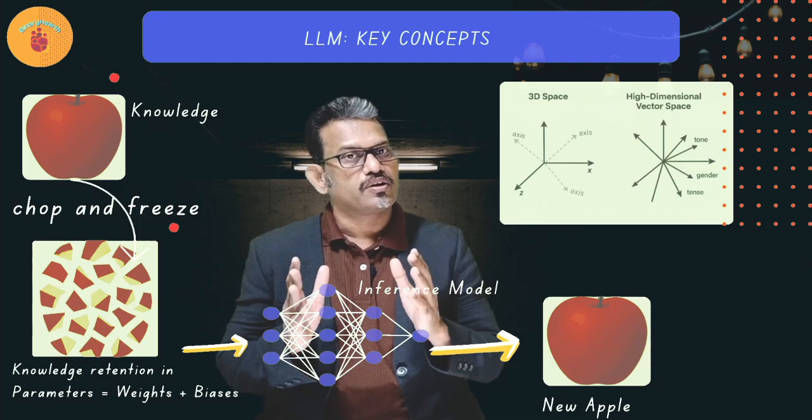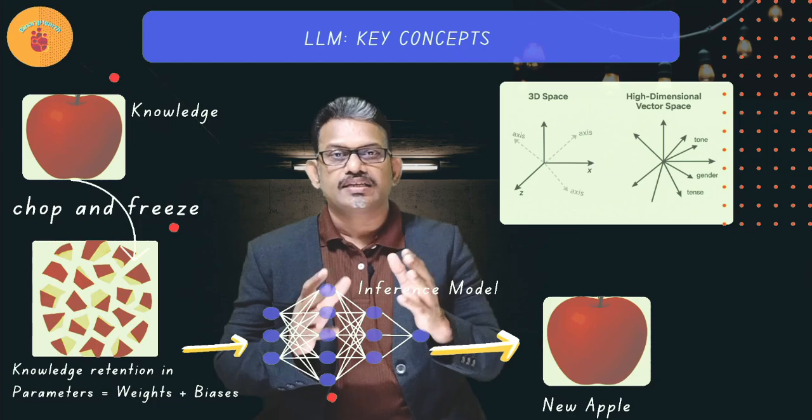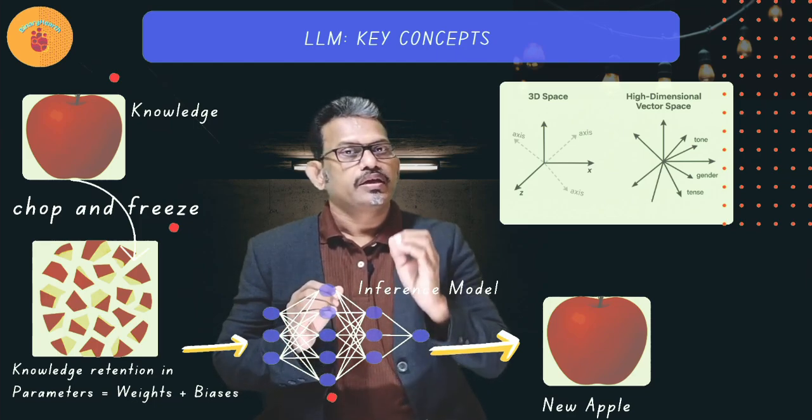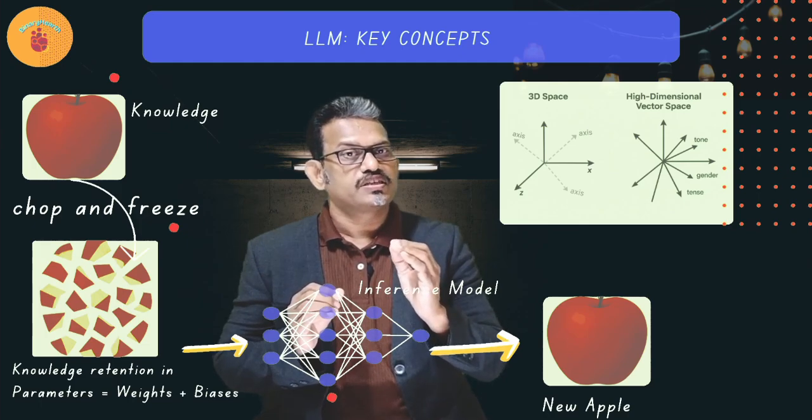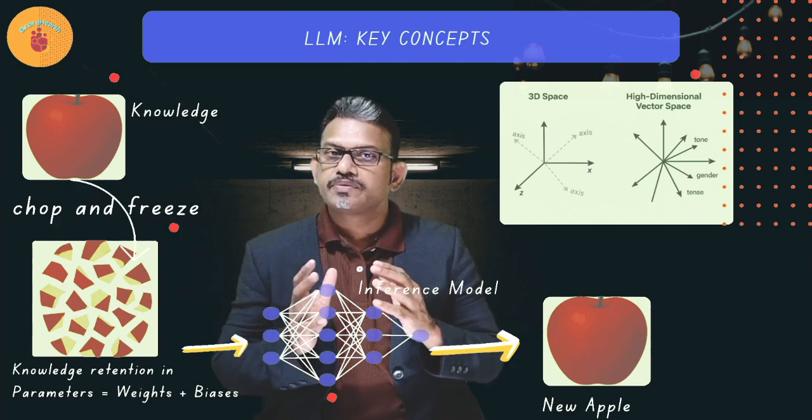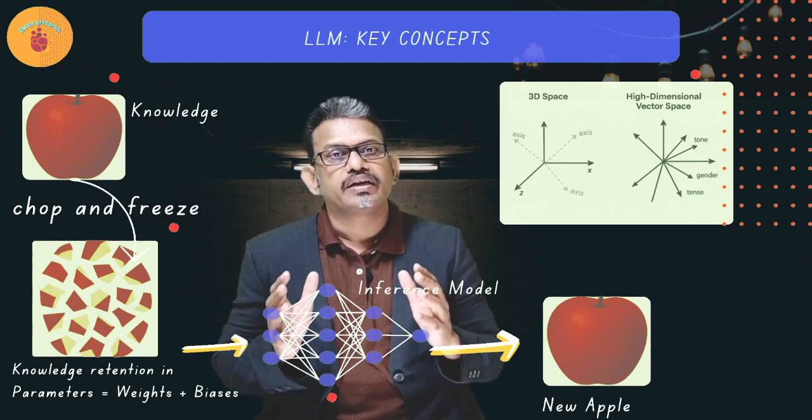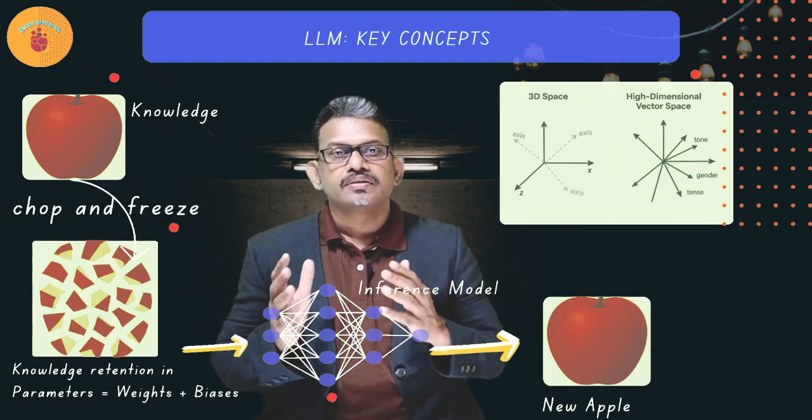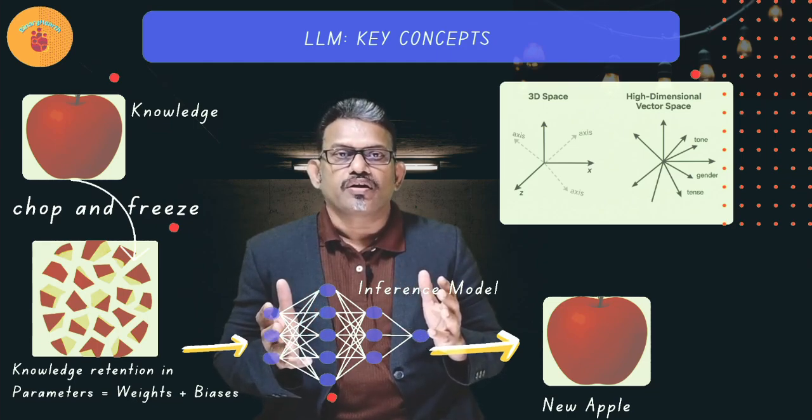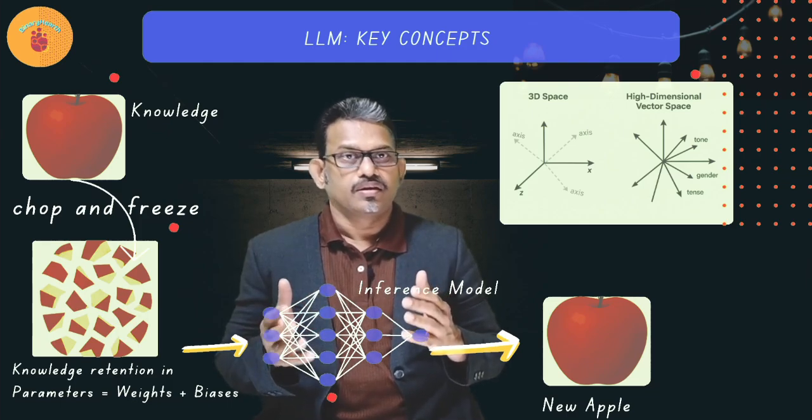That is your inference model with static knowledge. Now, instead of just tossing them, you encode all these relationships as vast, high-dimensional map. Each piece of apple is not a physical object here. It is a vector, a point of data distributed across thousands of dimensions. For example, 12,288 plus for GPT-4 model. This map is the LLM's knowledge. It is a static knowledge model because the map itself does not change after training is complete.